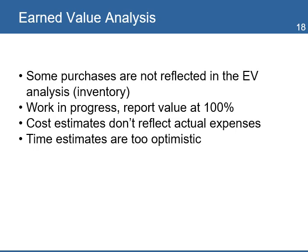Work in progress: you're not only reporting earned value at 100% or when a center is fully completed, but you're not taking into account those centers that are still under construction. Cost estimates don't reflect actual expenses — the material may be costing more than what was originally estimated. And time estimates might have been too optimistic.